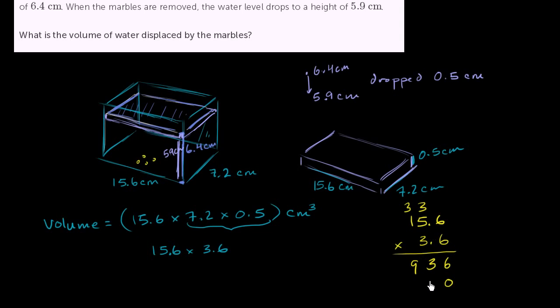3 times 6 is 18. 3 times 5 is 15, plus 1 is 16. 3 times 1 is 3, plus 1 is 4. And then we get 6. 3 plus 8 is 11, 16, 5.